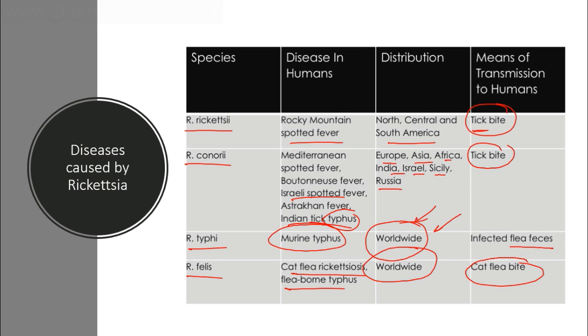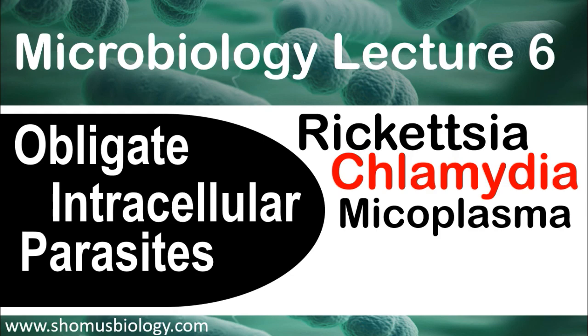Rickettsia has many species variations, and based on those species, it can cause different diseases throughout the world. It has features different from typical bacteria, making it difficult to treat — although antibiotics are sufficient to kill Rickettsia. I hope I have explained obligate intracellular parasites clearly. If you like this video, please hit the like button, share with your friends, and don't forget to subscribe.